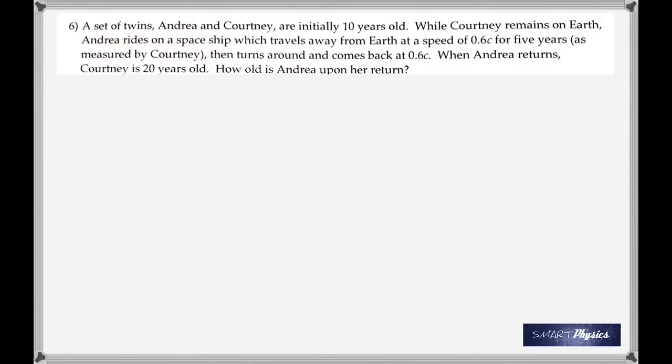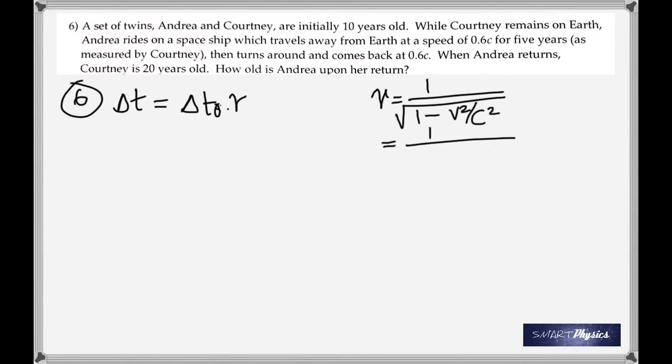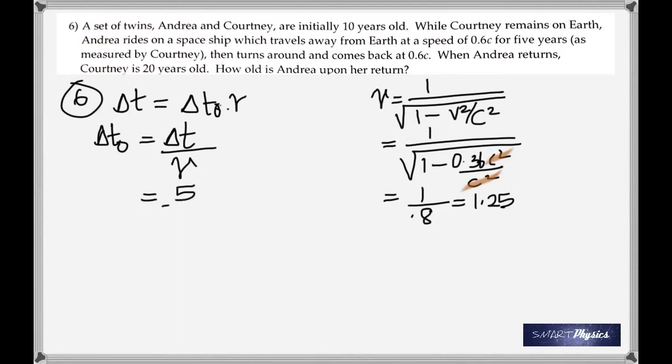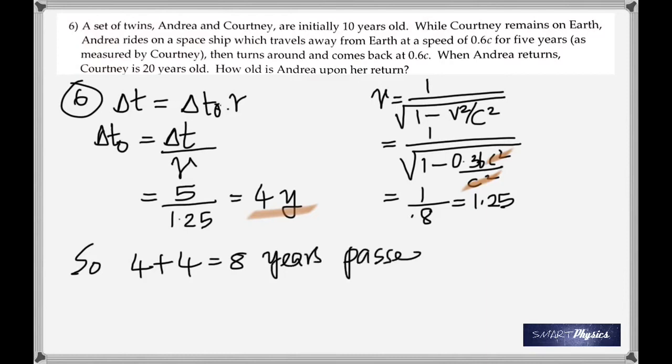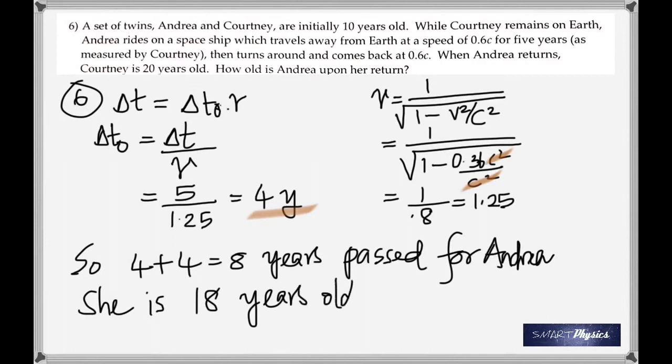Takes us to number 6. It's about a set of twins. And I'm not reading the question. Please take the time. It's about time dilation again. Delta T is delta T naught times gamma. Find gamma. You get it as 1.25. Put it back into the equation. So the answer is 18 years, because 8 years have passed. 4 years. Either way.